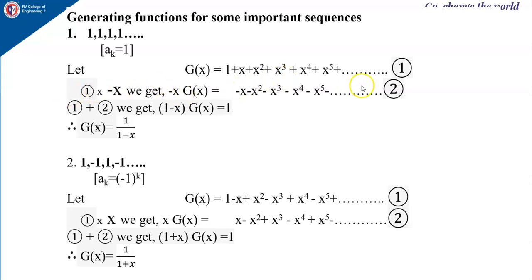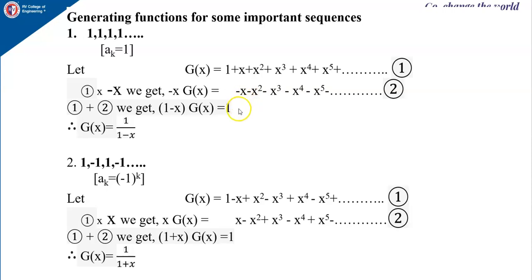Now multiply equation 1 by minus x. We get minus x · g(x) equals minus x minus x² minus x³ and so on. Adding equation 1 and equation 2, we get (1 minus x)·g(x) equals 1, since x minus x, x² minus x², and so on all cancel. Therefore, g(x) equals 1 divided by (1 minus x).